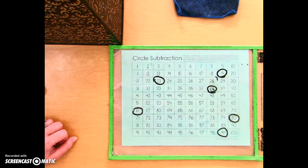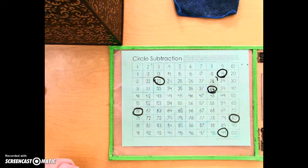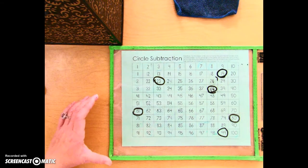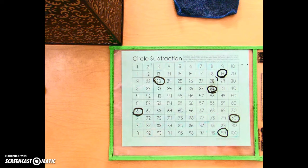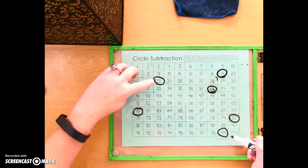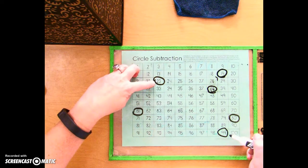You do 61 minus 38 is 23. Alright, I'm gonna do 99 minus... no, I've already done that. 99 minus 23 is 76.